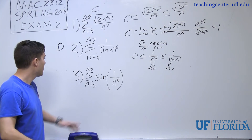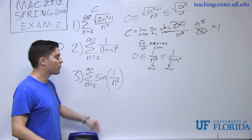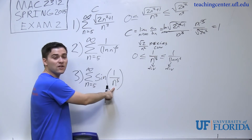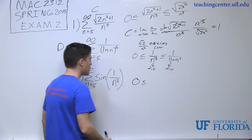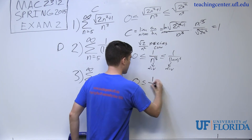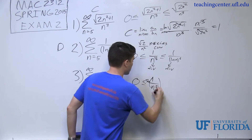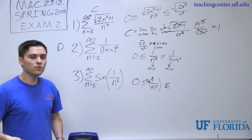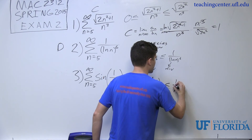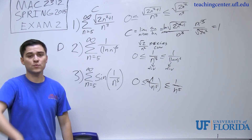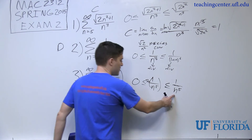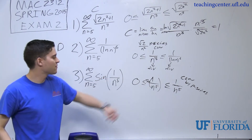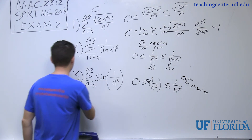For number three, sin(1/n⁵), I'll use a comparison test again. I think it will converge because of the 1/n⁵ term. I set up sin(1/n⁵) ≤ b_n, and I choose b_n = 1/n⁵, because taking the sine of something always reduces its value — sine is bounded between -1 and 1. The series 1/n⁵ is convergent by the p-series test, so by direct comparison, sin(1/n⁵) is also convergent.